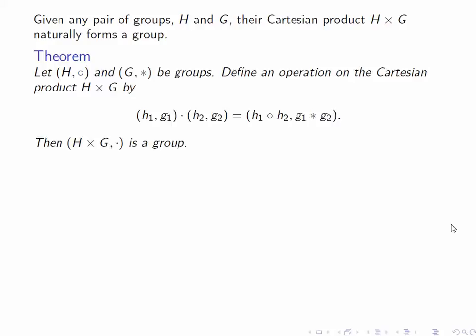Let's state this as a theorem. Let H and G be groups and denote their operations by circle and star respectively to emphasize that the operations in these groups may be very different. Define an operation on the Cartesian product H cross G by H₁G₁ dot H₂G₂ equals H₁ circle H₂, G₁ star G₂. We claim that H cross G with this operation is a group.